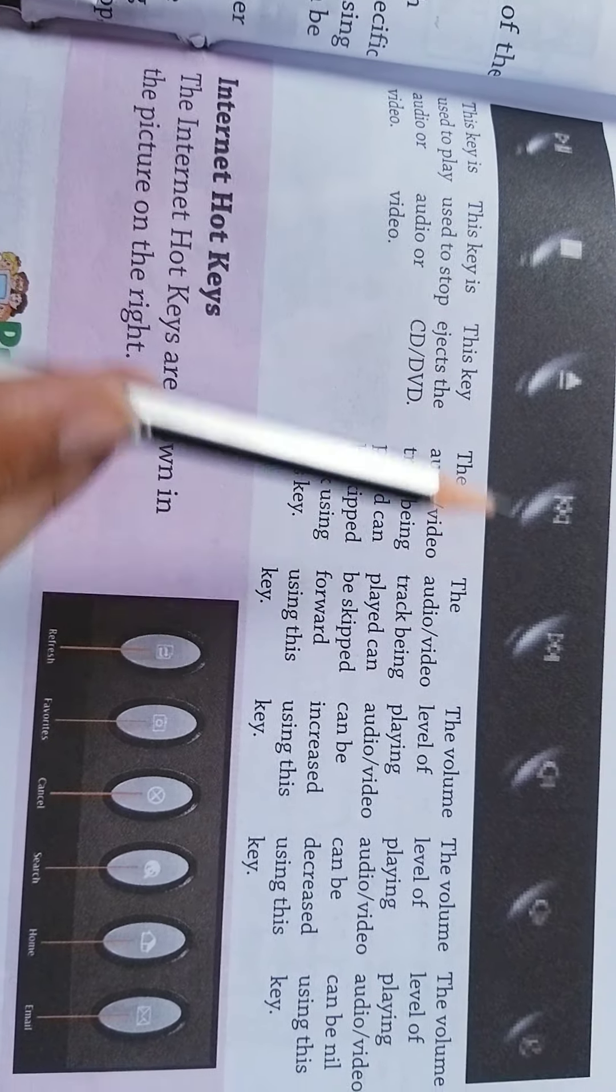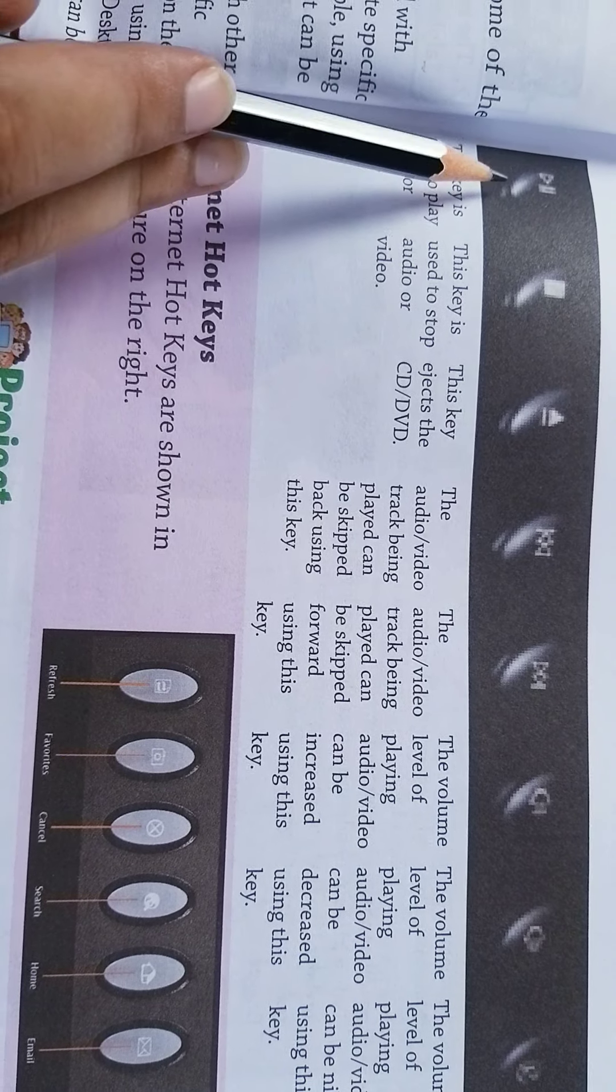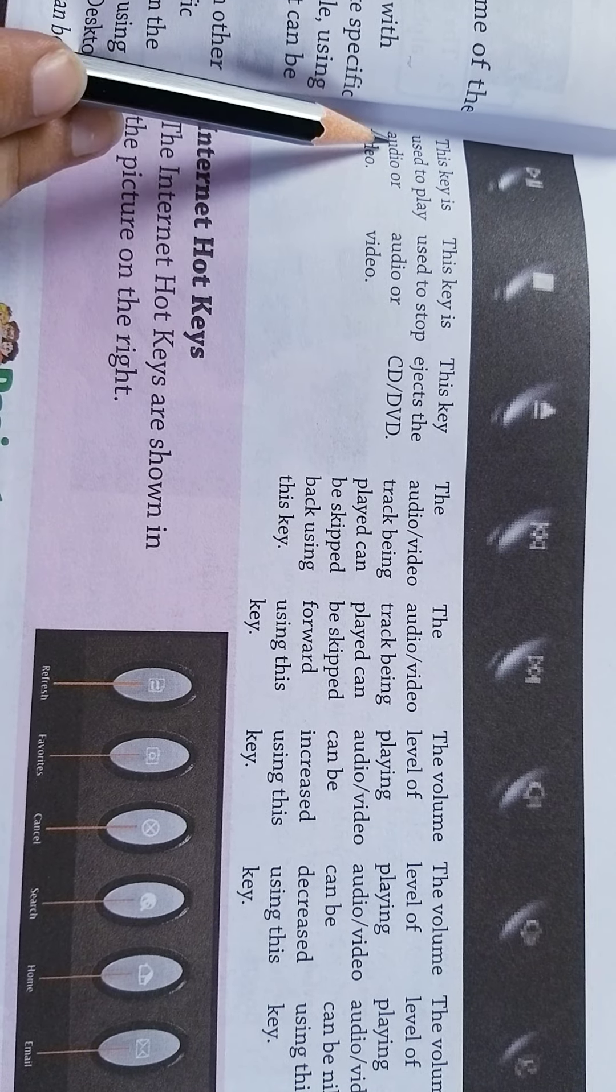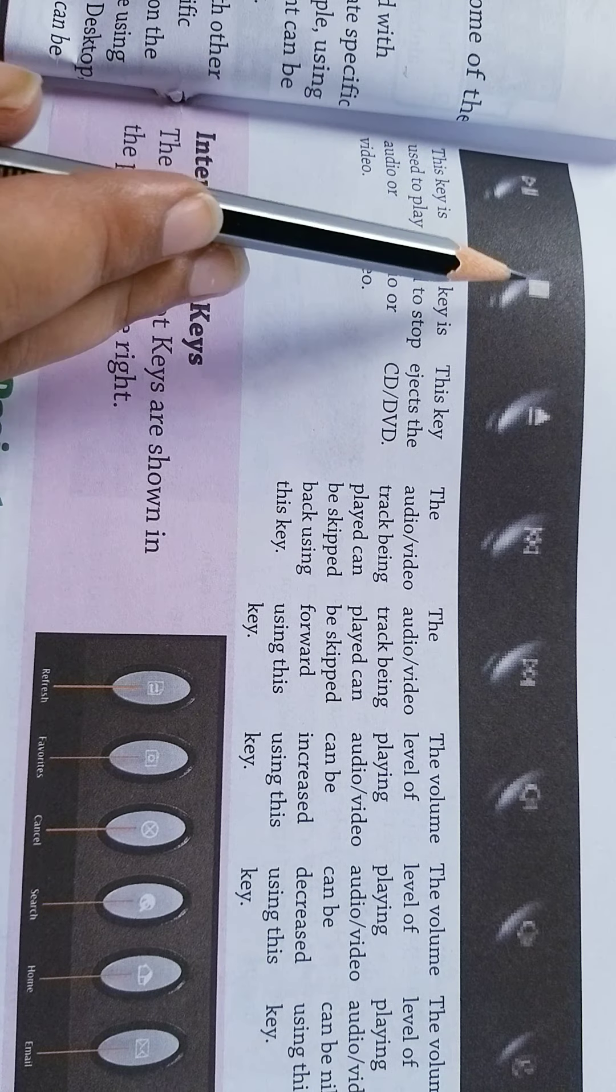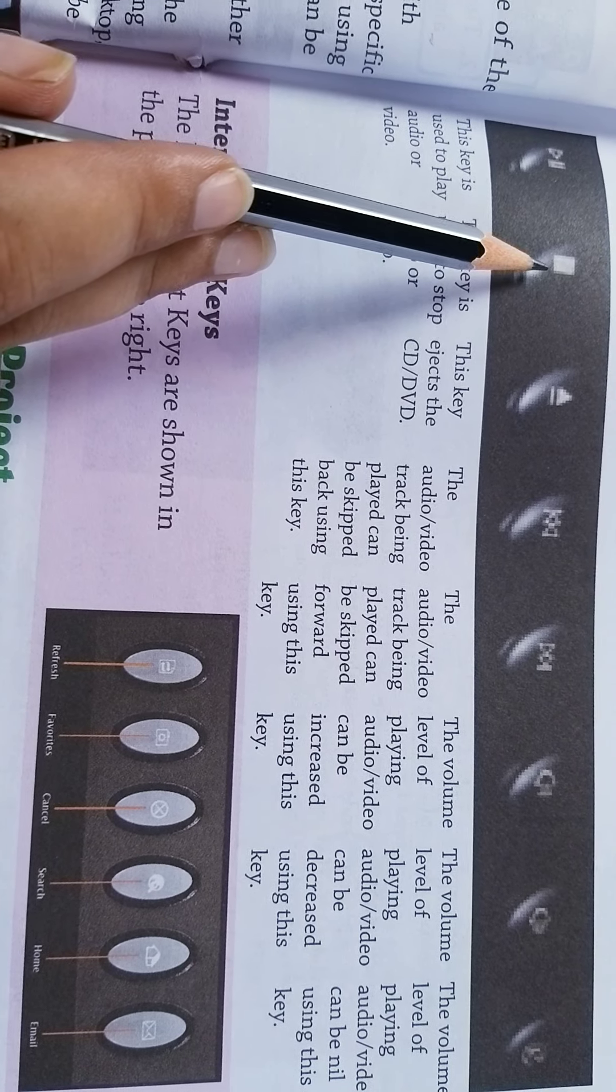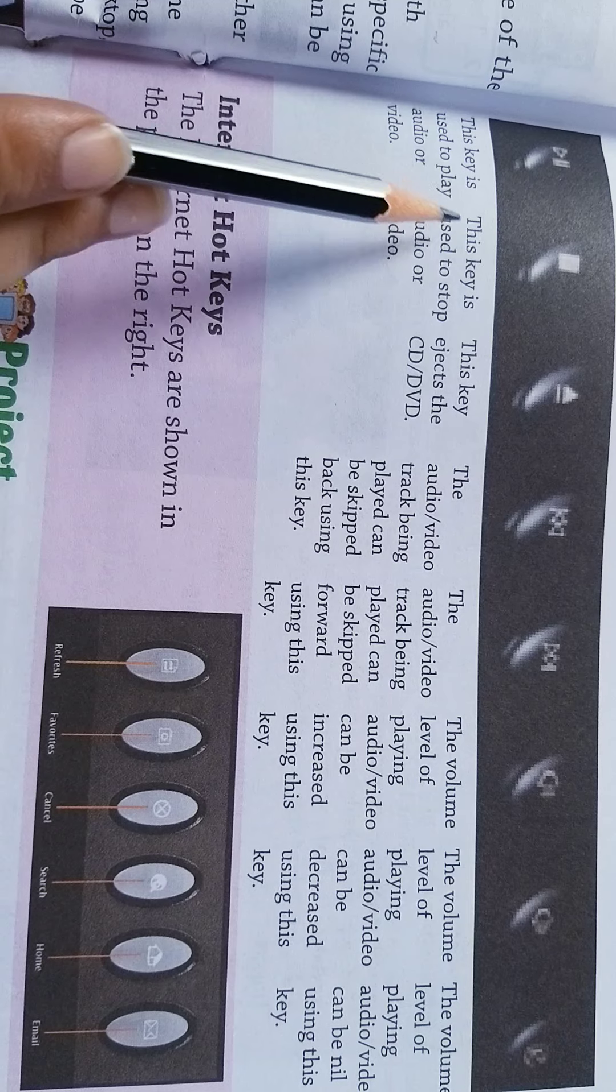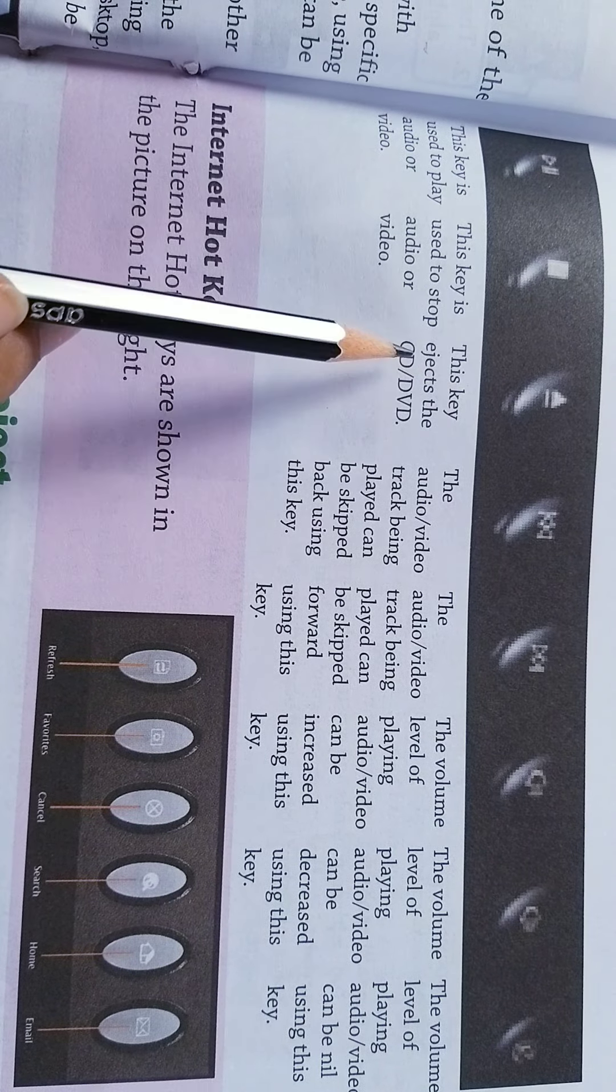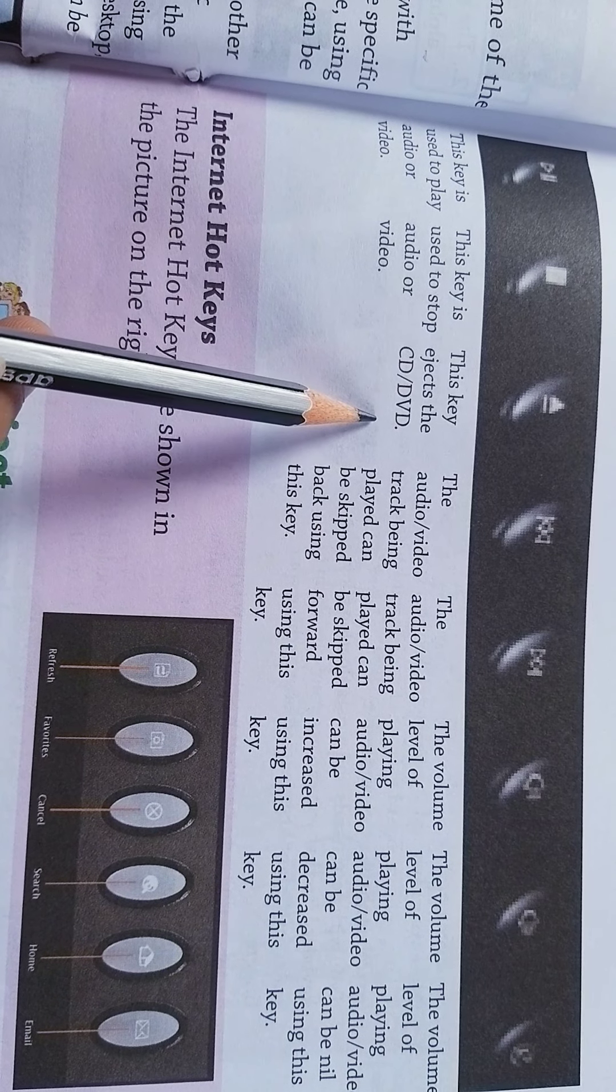Here are some keys and the use written there. You can see in the picture. This key is used to play audio or video. Next you can see the symbol in the picture. This key is used to stop audio or video. Next key is eject the CD or DVD.